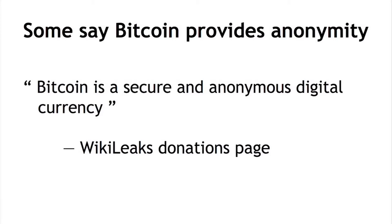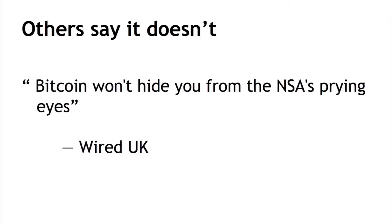If you look online, you'll see a number of people saying that Bitcoin is anonymous. For example, the WikiLeaks donation page says, in plain and simple terms, Bitcoin is a secure and anonymous currency. But you'll also find opinions to the contrary — for instance, Wired UK saying Bitcoin won't hide you from the NSA's prying eyes. So how can we resolve this confusion?